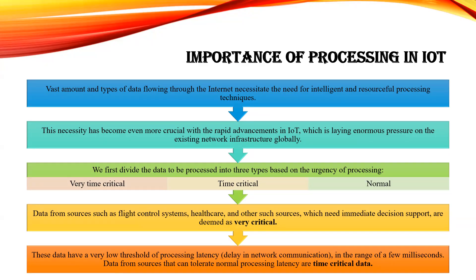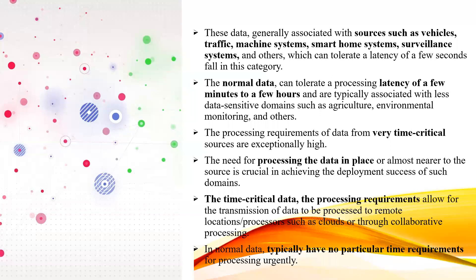Time critical data includes systems such as vehicles, traffic management, machine-oriented systems, motor switches, smart home or automated home systems, and surveillance camera systems. All these come under time critical.